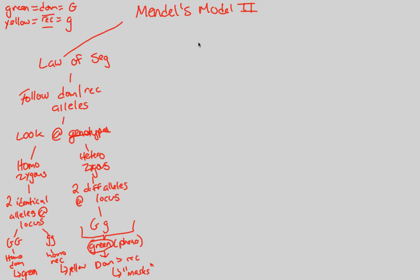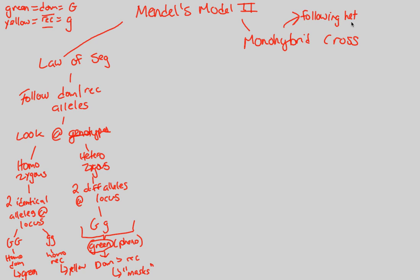Next is the idea of a monohybrid cross, which is something Mendel did. In this situation, you're going to be following the heterozygote — you need to make a heterozygote first.